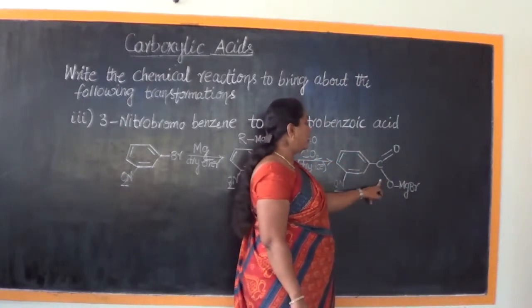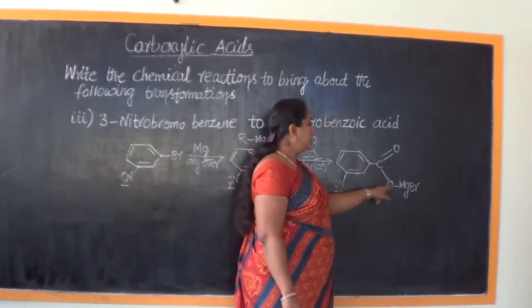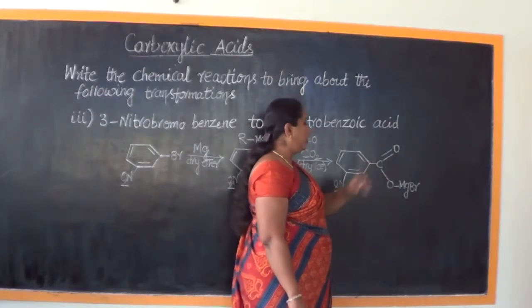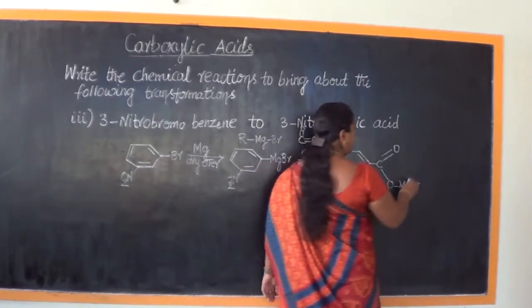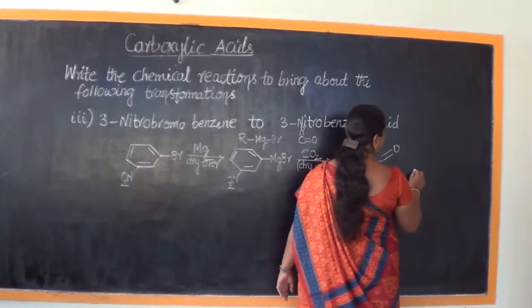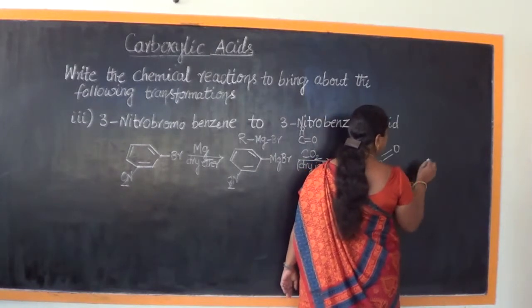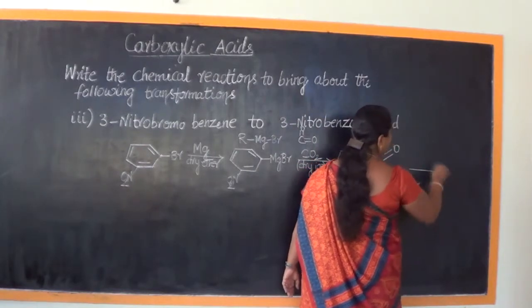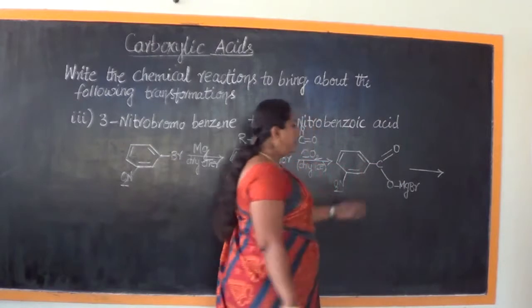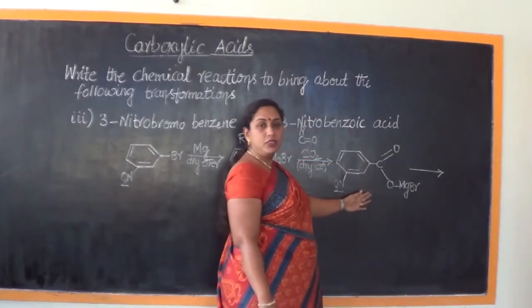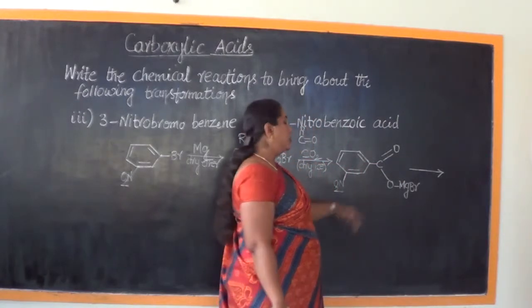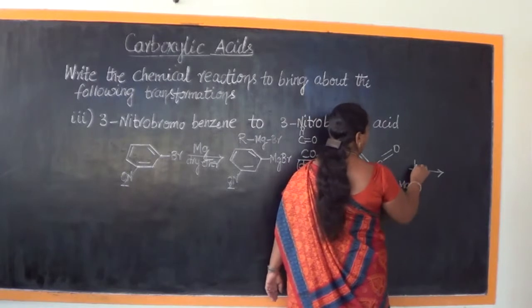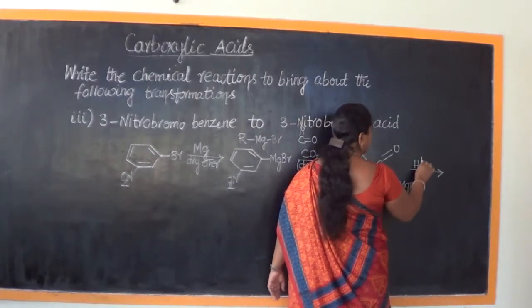The oxygen is attached to MgBr, which satisfies the tetravalency of carbon (four bonds) and the divalency of oxygen (two bonds). Once we obtain this intermediate, it is straightforward to get the carboxylic acid. From here we just need to subject it to the process of acid hydrolysis.